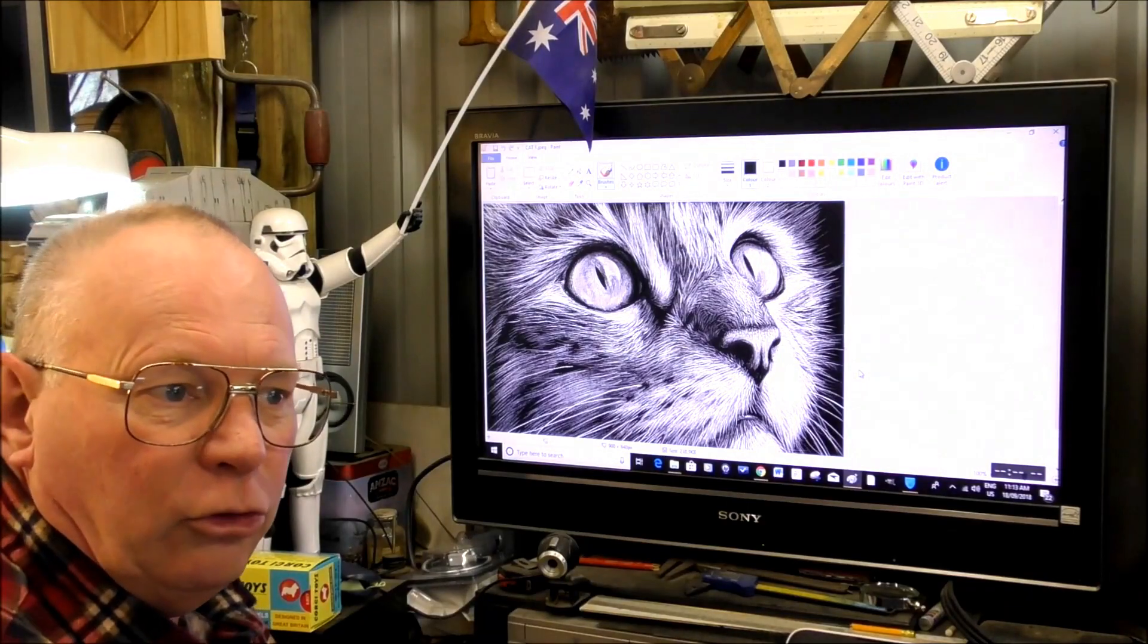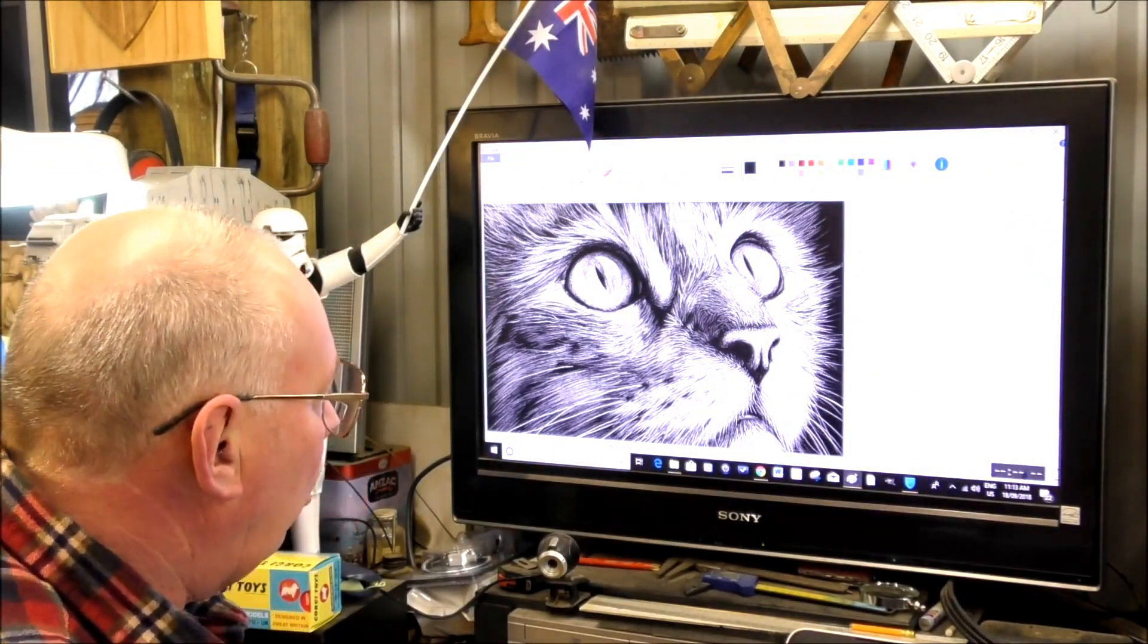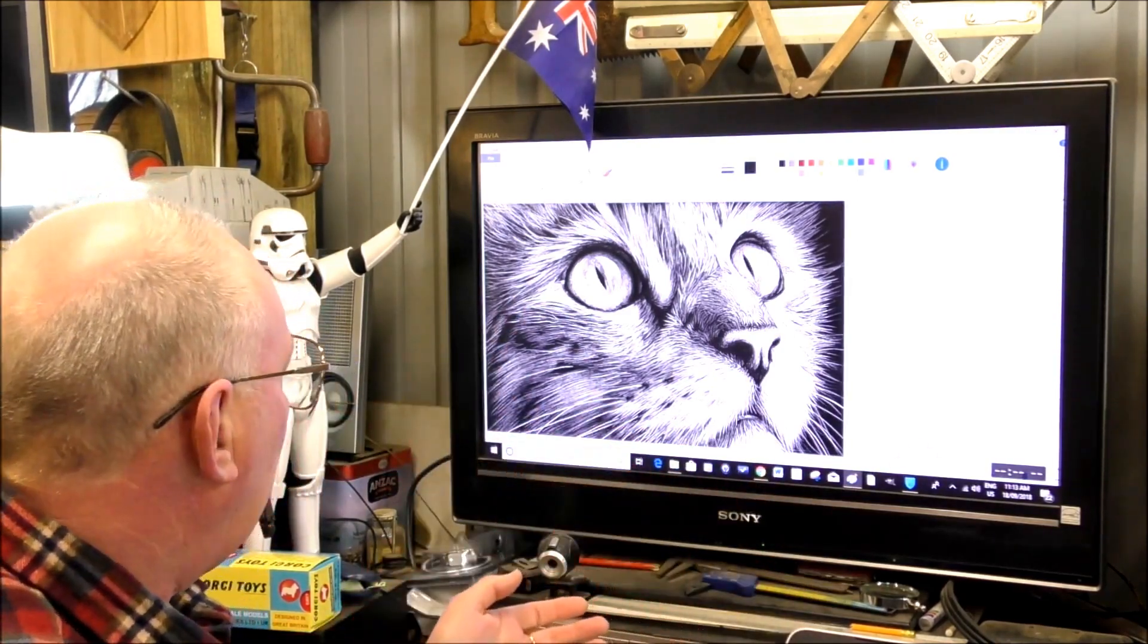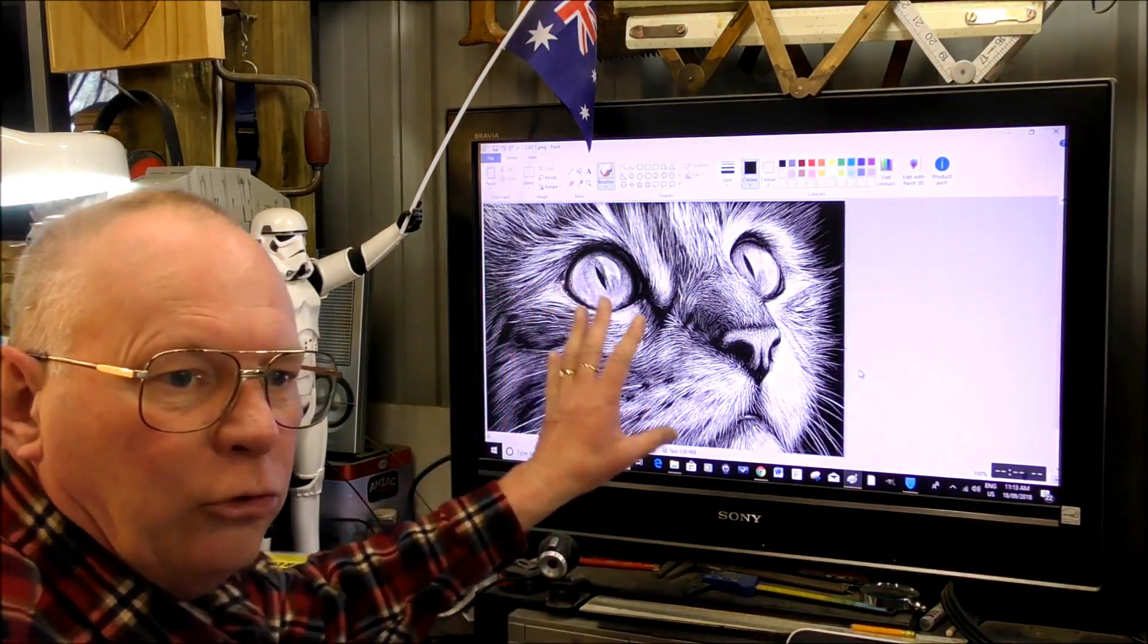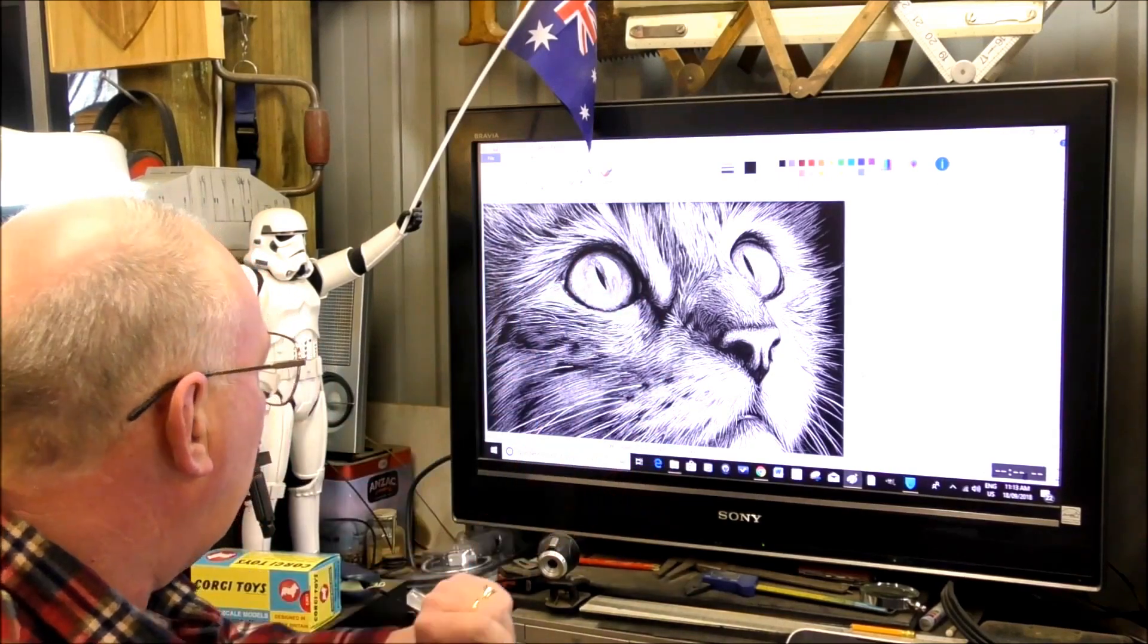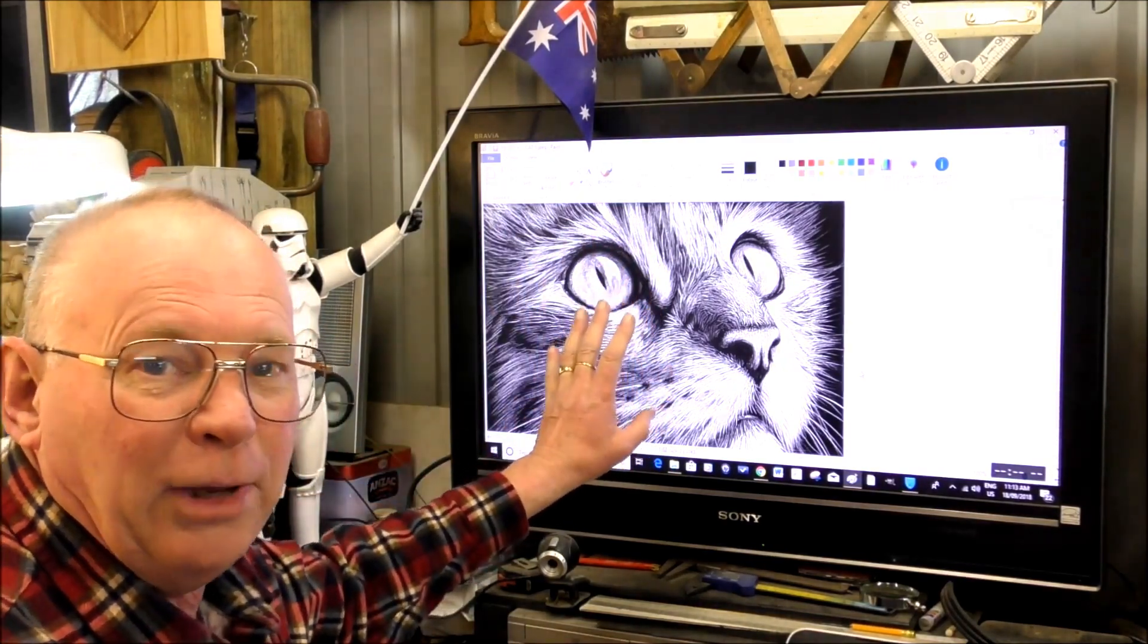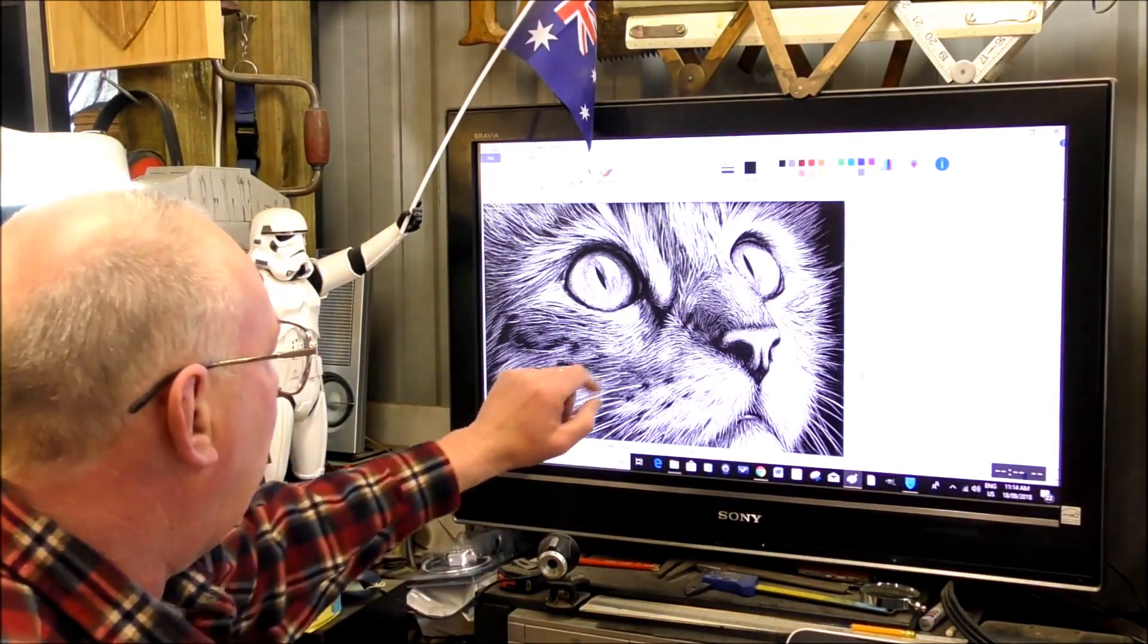Basically what you need to do is have a black and white image or change a color image into a black and white one, which I have done here. This is a very good representation of a cat's face in black and white, but you still need to prepare it even further.